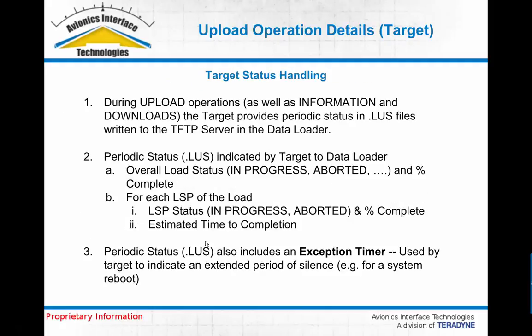During upload operations — and this is also the same for the information and download operations — the target sends periodic status updates to the TFTP server in the data loader. These status updates indicate: first, the overall status of the load operation, such as in progress, aborted, error, or idle. That is reported along with a percentage of completion, which the avionics computer is calculating and keeping track of, and reporting in these periodic status files so the data loader can display that to the operator.